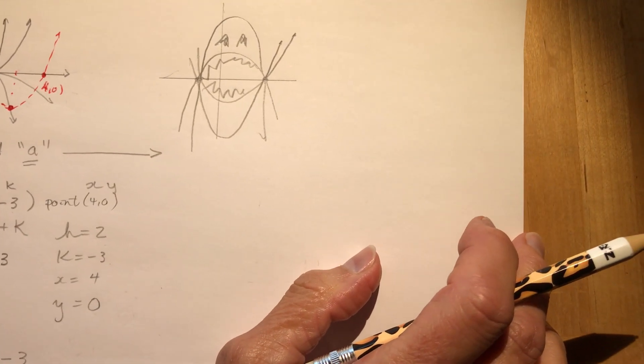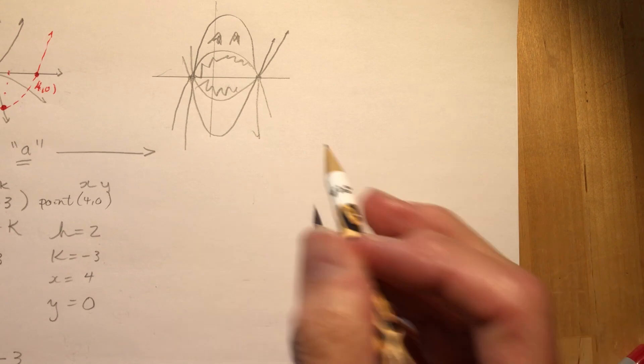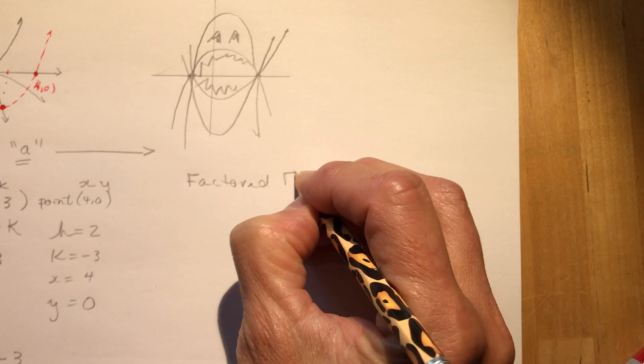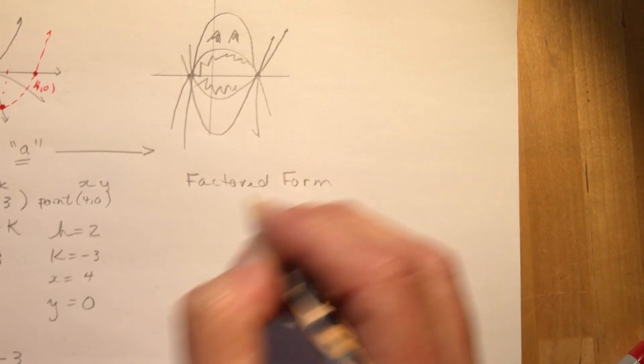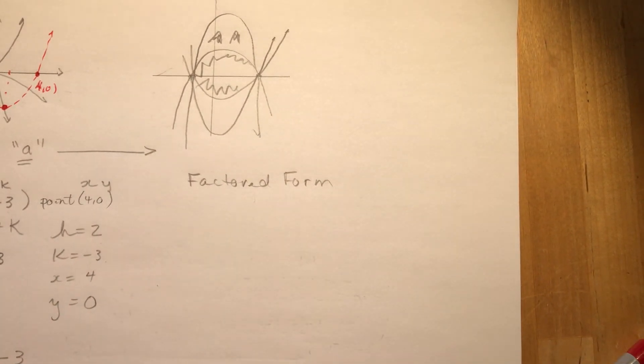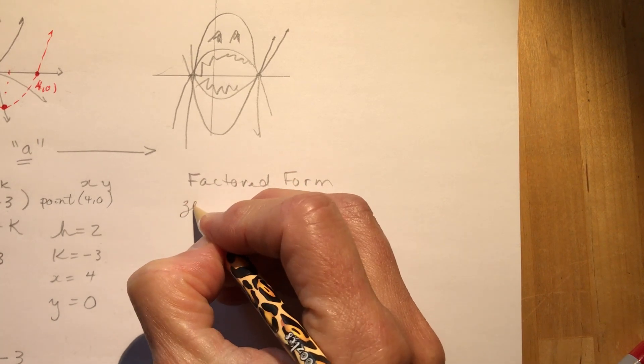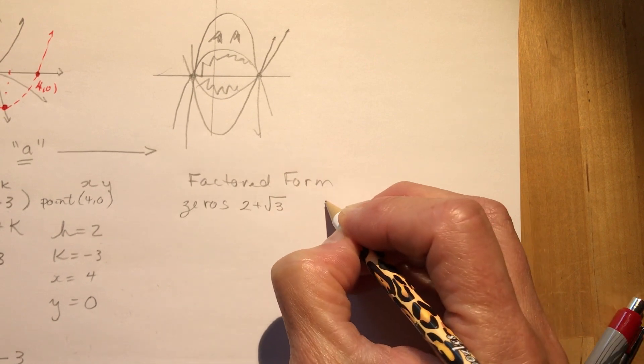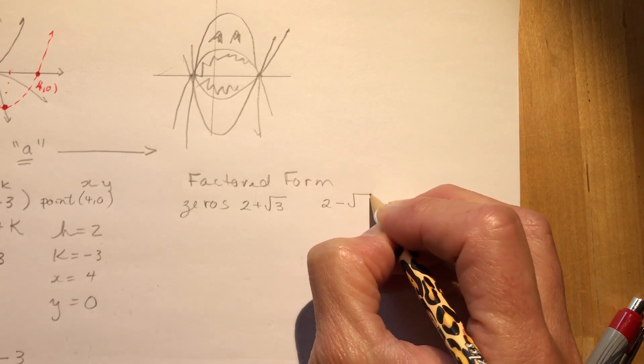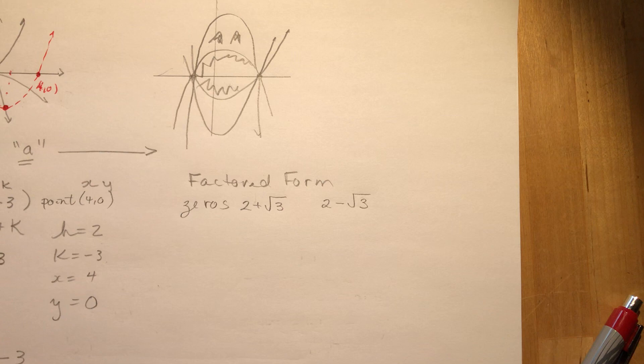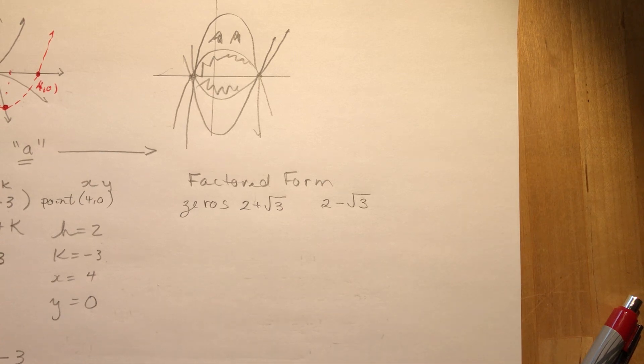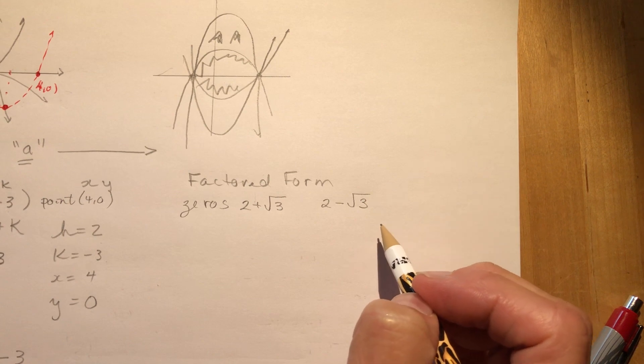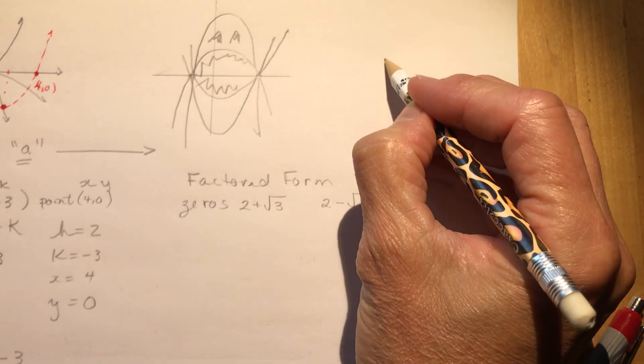Let's take a look at one if I had the zeros, so in factored form. And this time I'm going to use an example that's probably one of the hardest ones that you will have to do. And that's if they gave you that the zeros are two plus root three and two minus root three. So if those are my zeros, and I need to find the equation of something, so right now all I have is this.